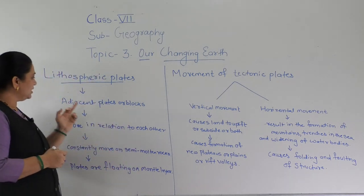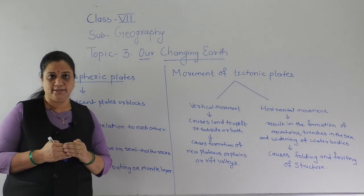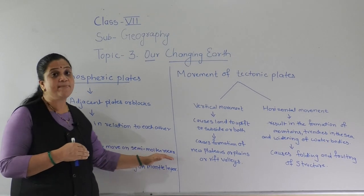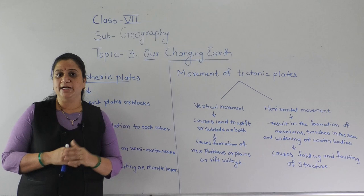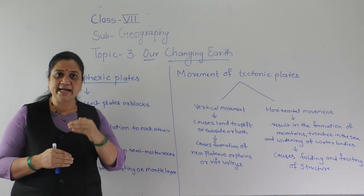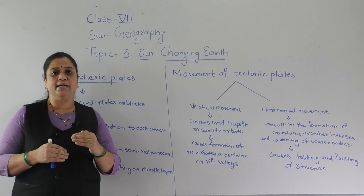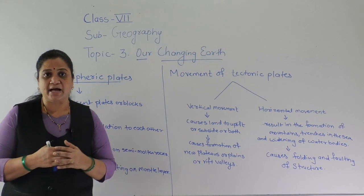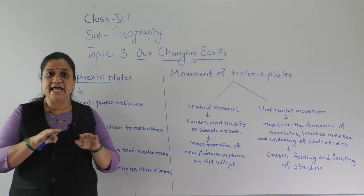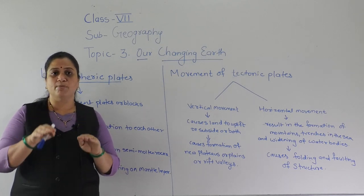These blocks move in relation to each other. They are constantly moving on the semi-molten rocks. The second layer below the crust is the mantle, and in the mantle we have the hot molten magma. These lithospheric plates or blocks are floating in this layer, that is, on the hot molten magma.